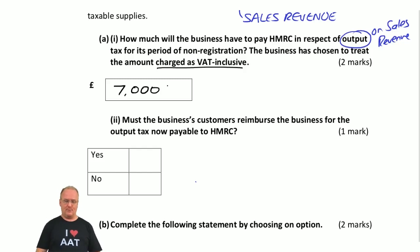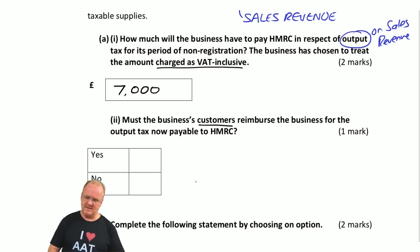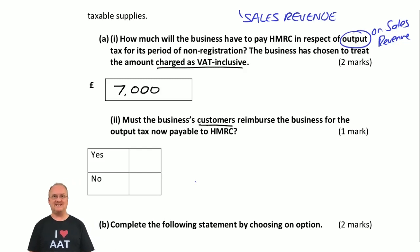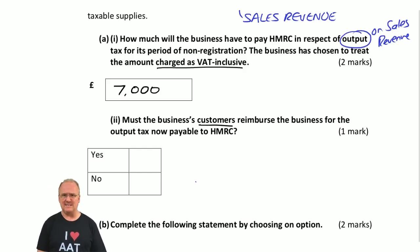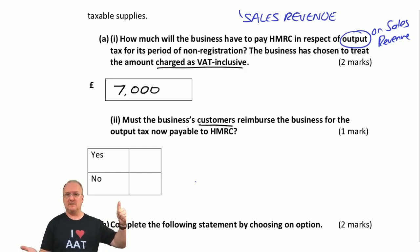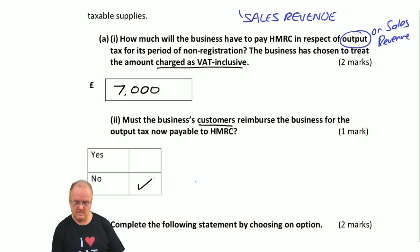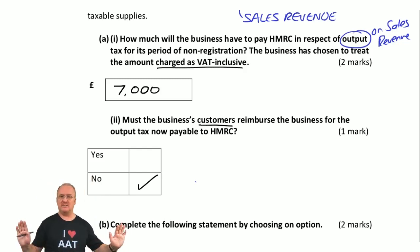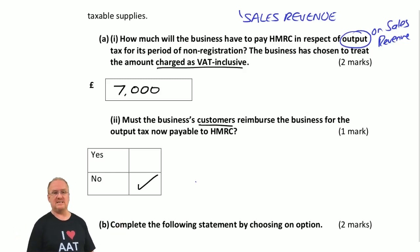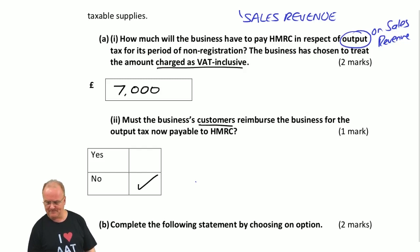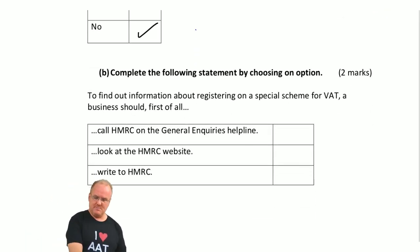Let's move on to requirement A2: must the business's customers reimburse the business for the output tax now payable to HMRC? What the company could do is go to its customers and say, 'We forgot to add VAT — now we're going to charge you that.' But no, that is not how it works. That would be totally unfair to customers who've been quoted a price. This is entirely the company's fault. The customers have paid £42,000; their job is done. The VAT liability falls on the company.